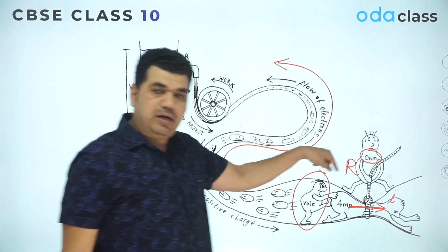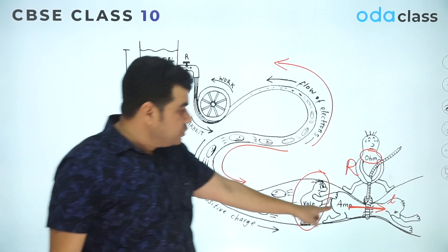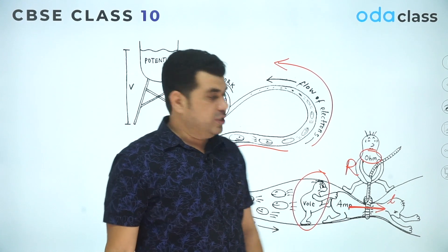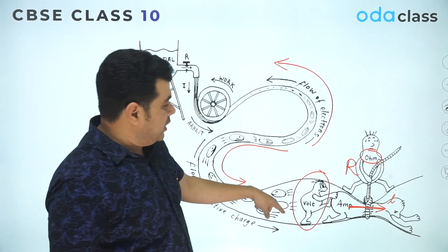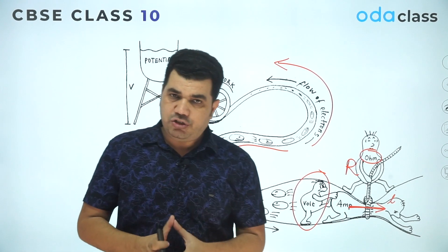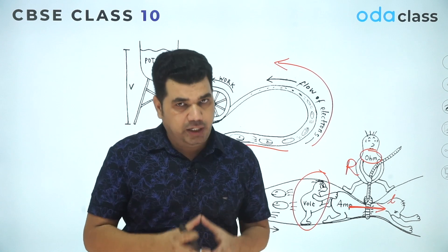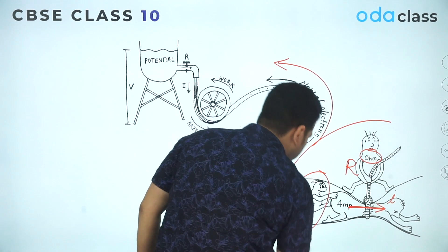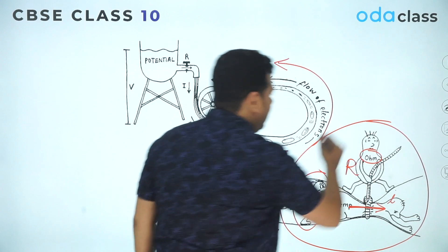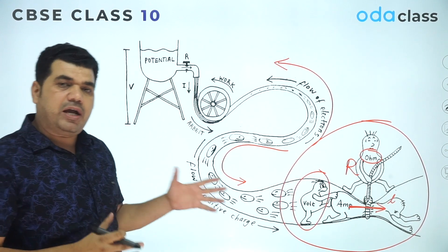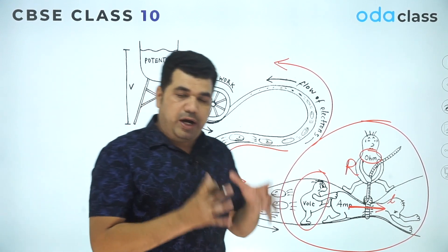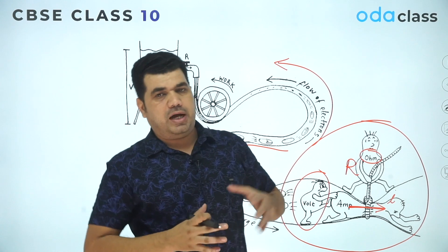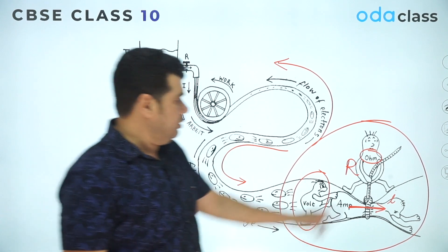The resistance opposes the motion of that current. So this is the relation between voltage, current, and resistance. I hope you liked that diagram — you can use it to remember the function of voltage, resistance, and current. Let's see one question.